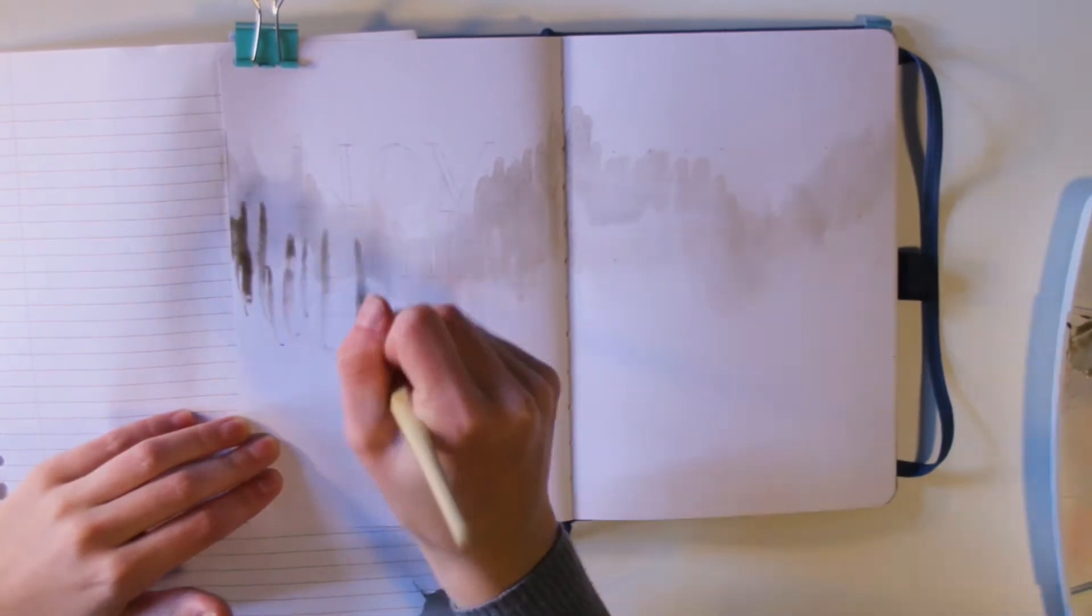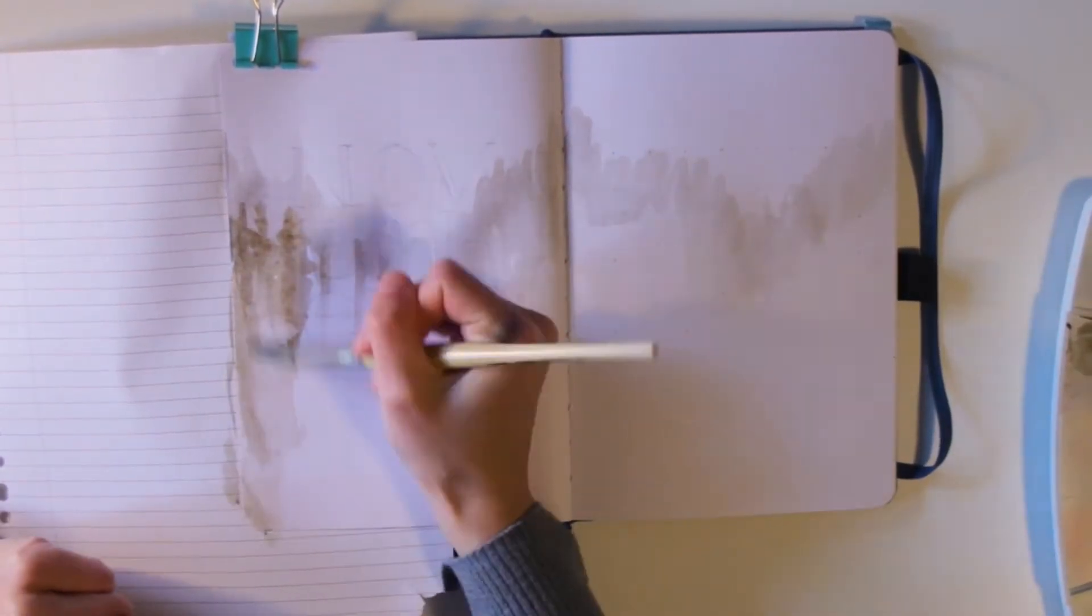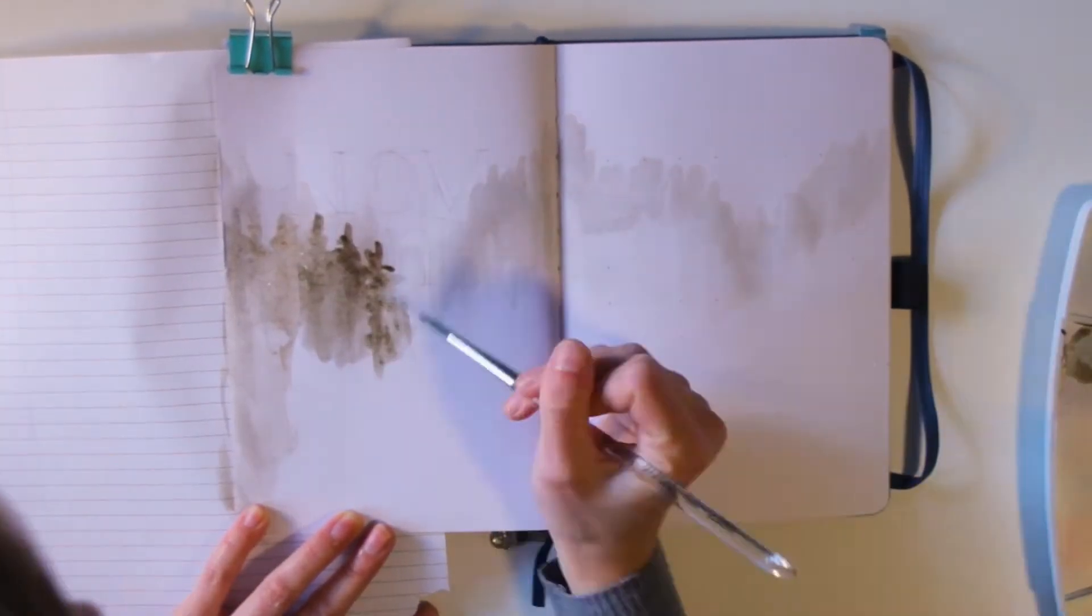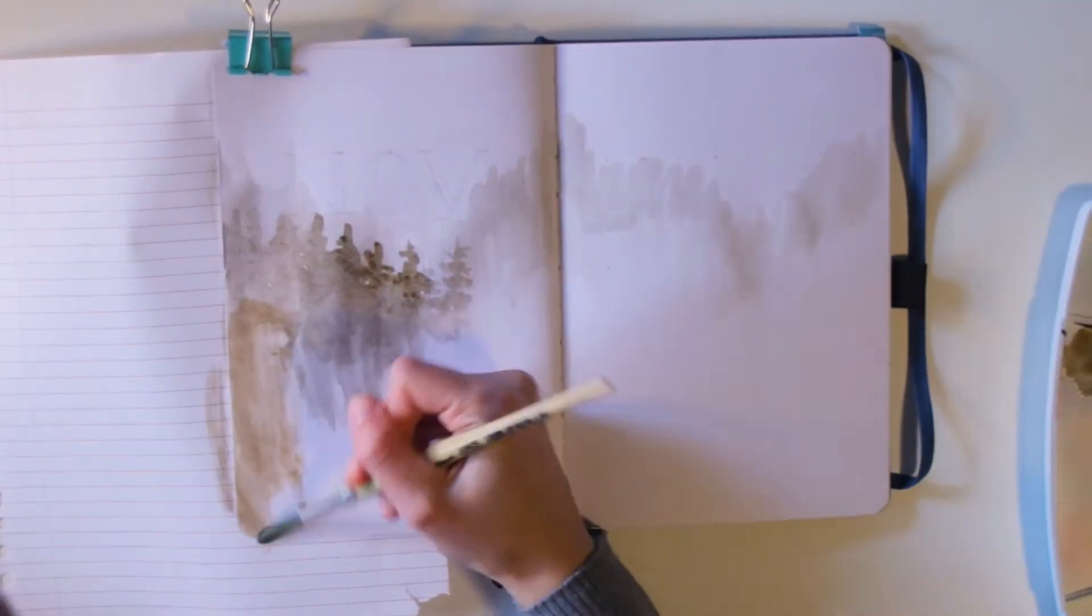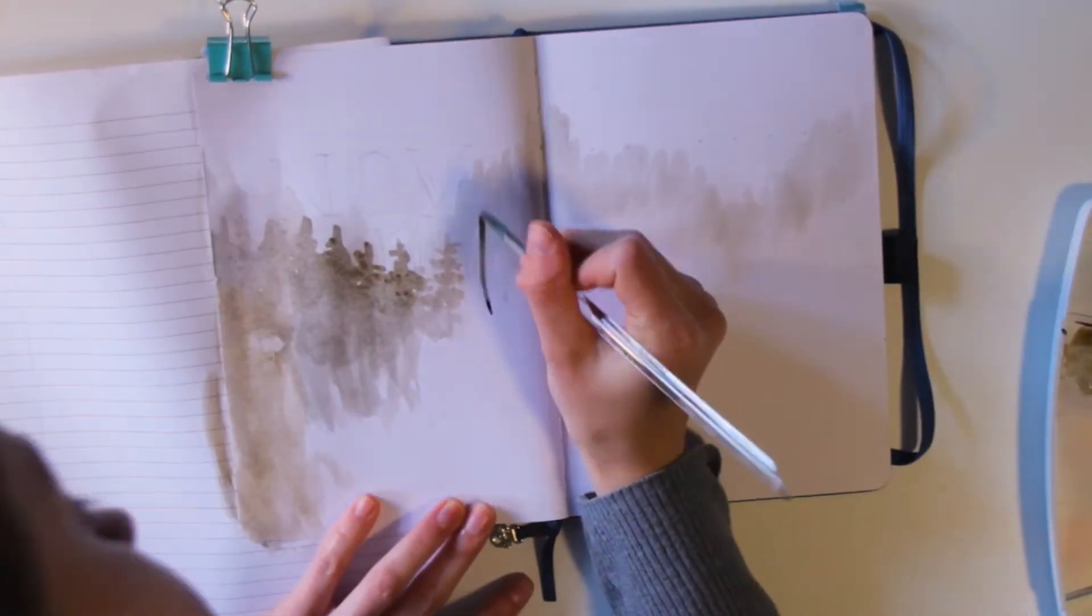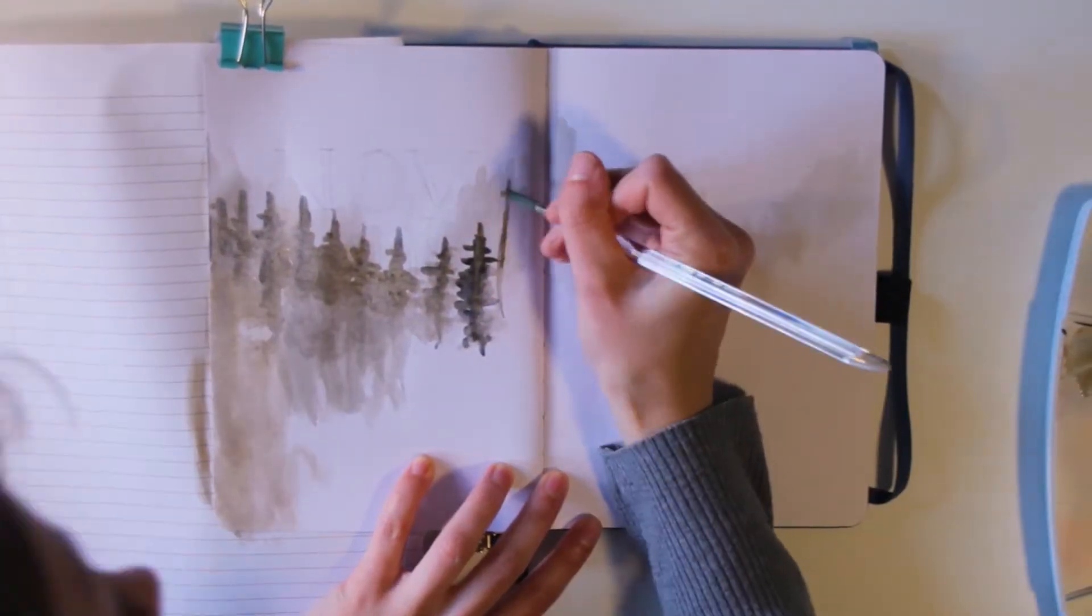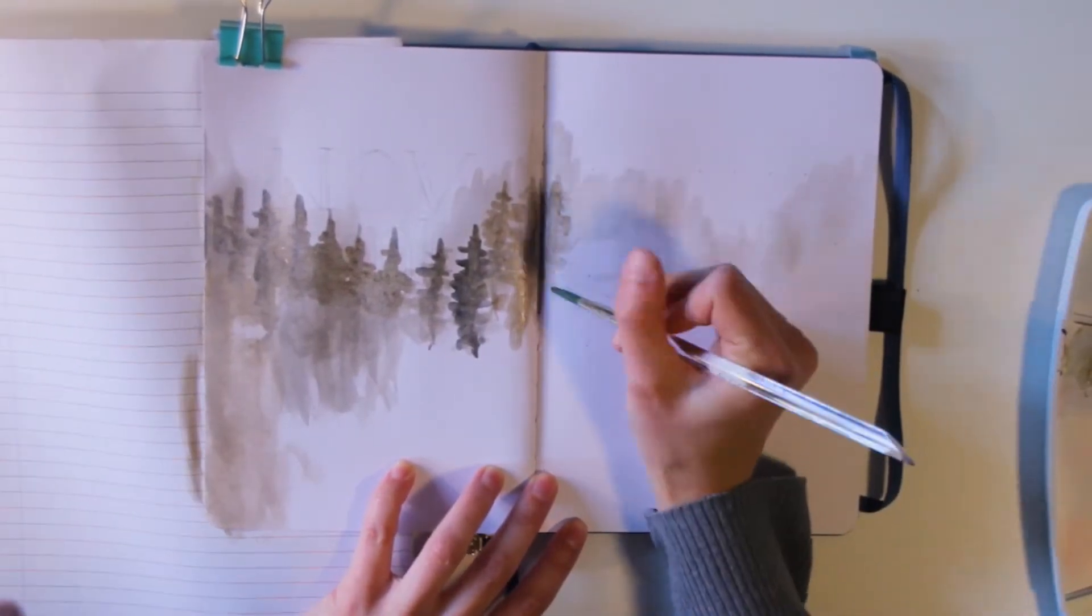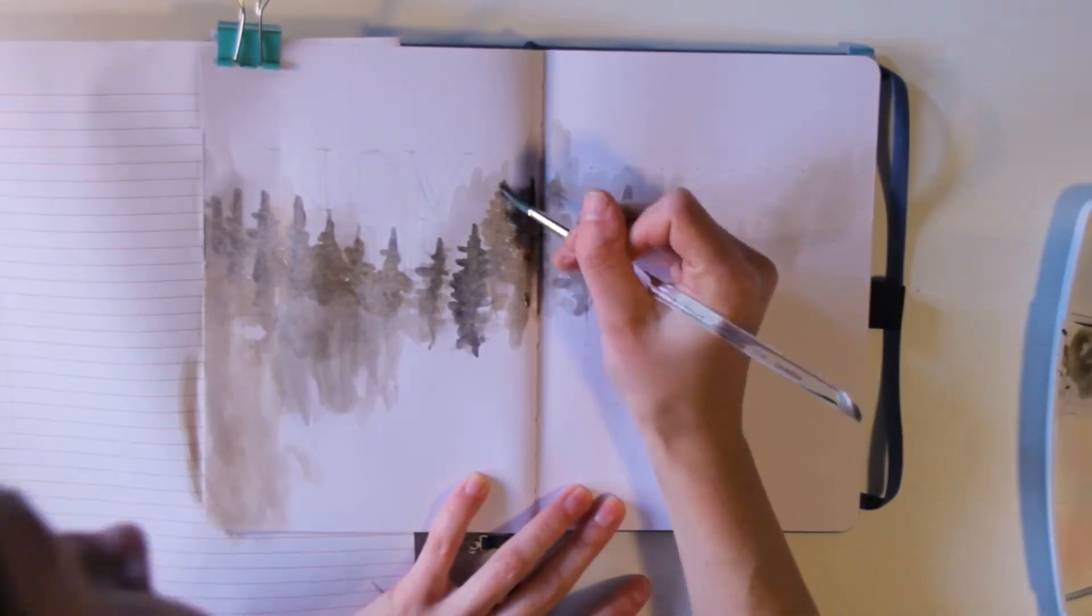So to start this off I decided to put down a very watered down mix between brown and gray to give that foggy effect in the background. And then I slowly work my way down. The more down I go, the bigger the trees become and also the more vibrant and darker they become because they're technically closer.